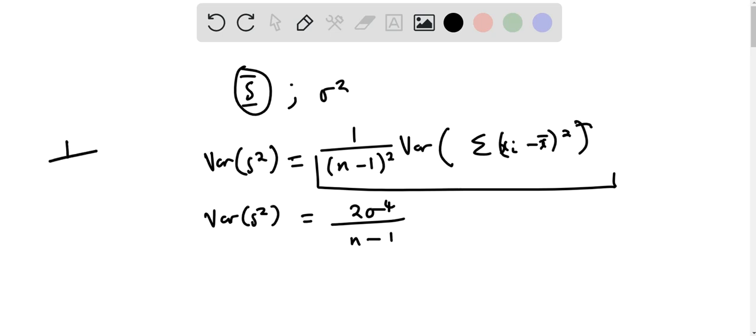This is coming from the inverse of (n-1) raised to the power of 2, var of sigma squared times n minus 1.